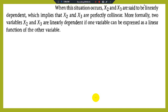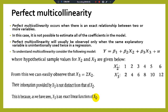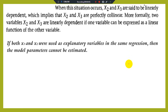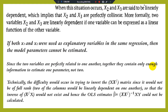More formally, two variables x₂ and x₃ are linearly dependent if one variable can be expressed as a linear function of the other. If both x₃ and x₂ are used as explanatory variables in the same regression, the model parameters cannot be estimated — they give biased estimators — since the two variables are perfectly related. Together they contain only enough information to estimate one parameter, not two.